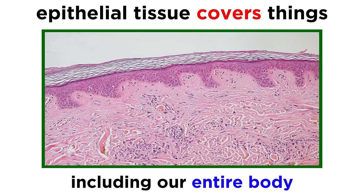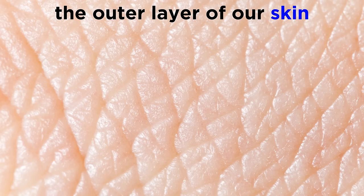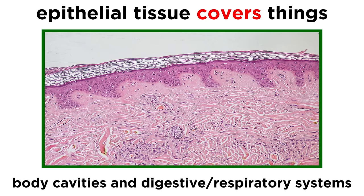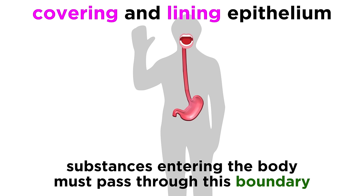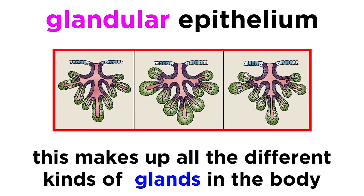In short, this is tissue that covers things, including our entire body. The outer layer of our skin is made of epithelial tissue. This tissue also dips into body cavities, covering the digestive and respiratory systems, and it even lines blood vessels and various organs. All of this can be considered covering and lining epithelium, which act as boundaries, and any substance that enters or exits the body must pass through some kind of epithelium. There is also glandular epithelium, which makes up all the glands in the body, and we will discuss those in more detail a little later.